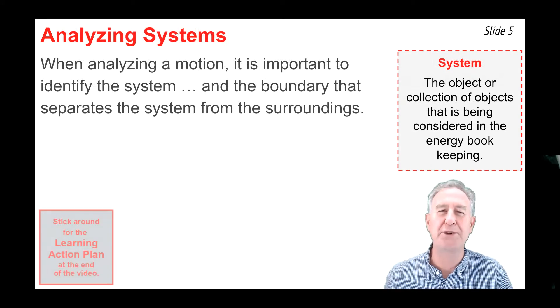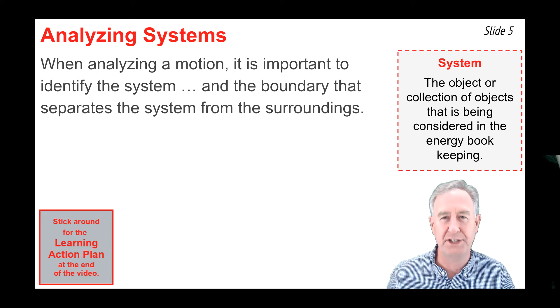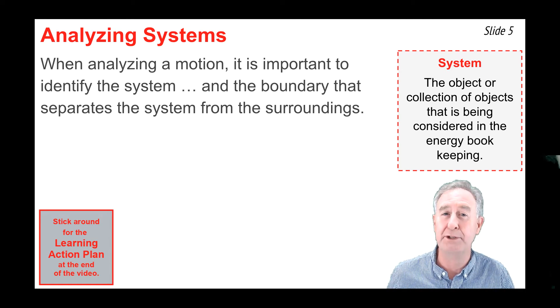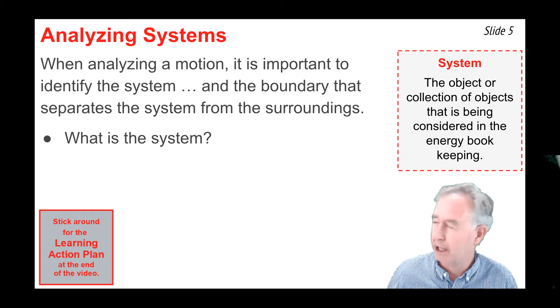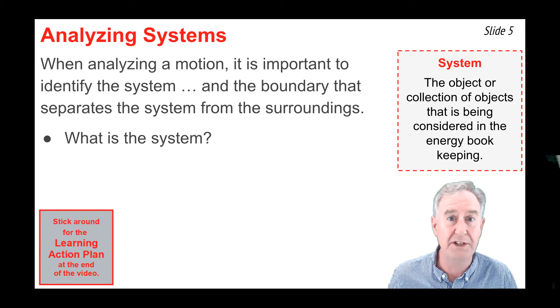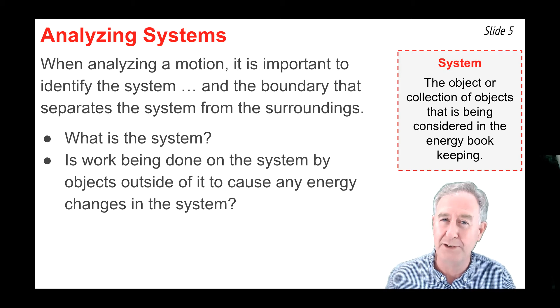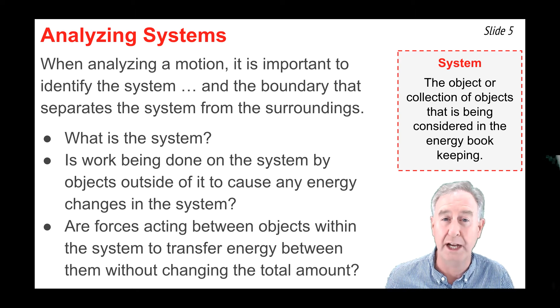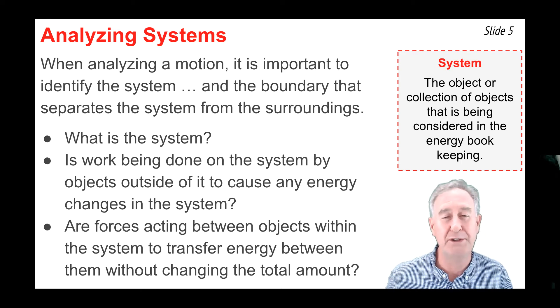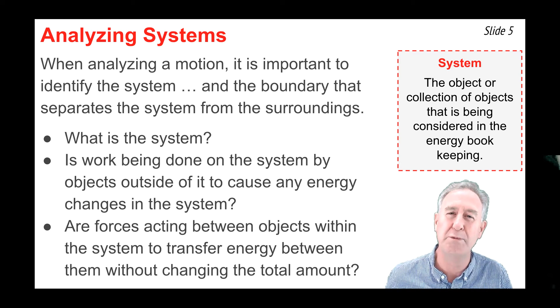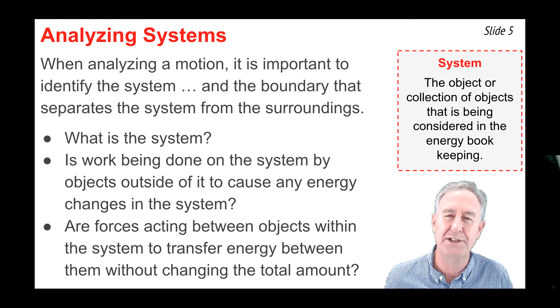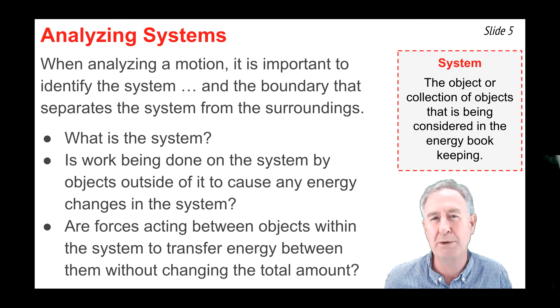When analyzing a motion from an energy standpoint, it's important to define the system and the boundary that separates the system from the surroundings. We have to ask, what is the system? What object or objects are part of the system? Once we've answered that, we can then answer the question, is work being done on the system by objects outside of it in order to have an external energy transfer, thus changing the amount of energy in the system? Or are forces acting between objects within the system in order to transfer energy from one object to the other, or from one form to another? When we think of objects in this way, as a system, we can begin to do our energy analysis and keep track of energy.